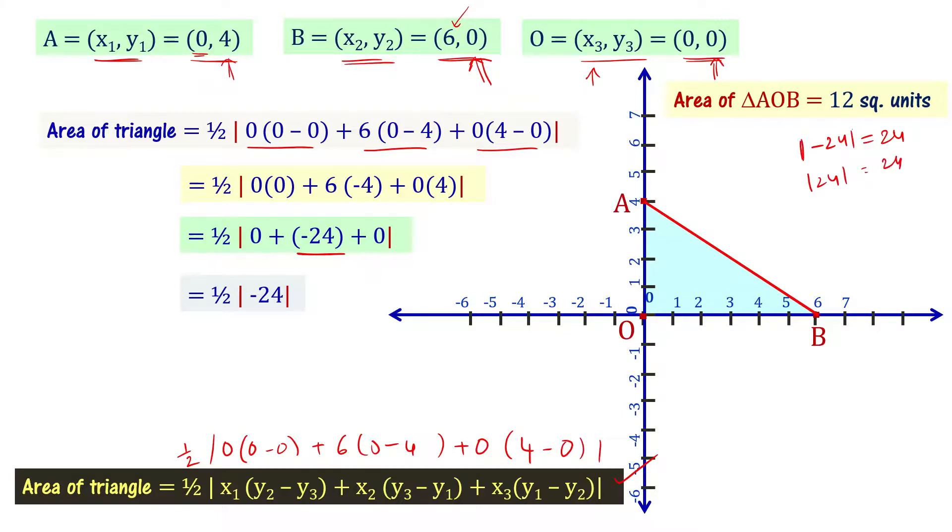The modulus operator, if we use it, the meaning of the sign changes to positive sign. Minus 24 becomes 24. And half times 24, that is equal to 12 units.